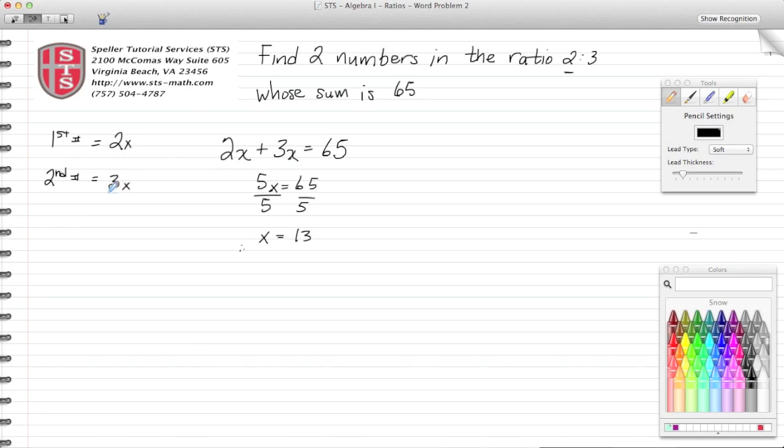For our first number, 2 times 13, well that gives us 26 as a product. And for our second number, 3 times 13 gives us 39. And I'm going to add both of these numbers together.